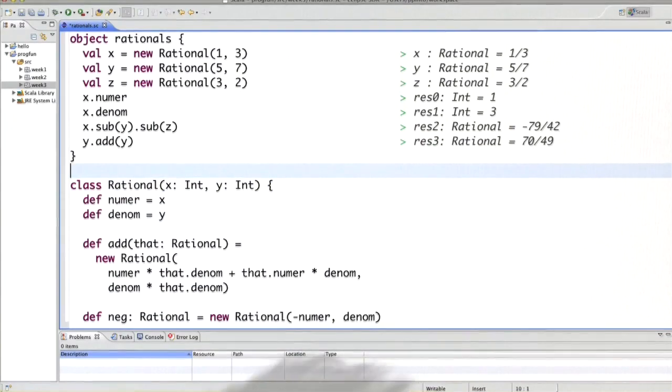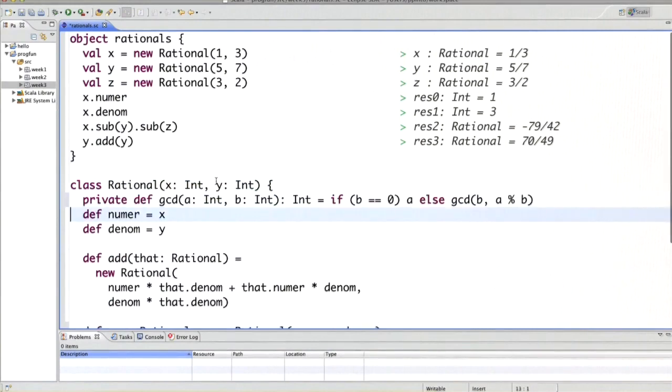So let's see how we would do that in the worksheet. What I'll do first is I will retake the definition of gcd that we have seen the previous week and I'll make it a method of class rational.